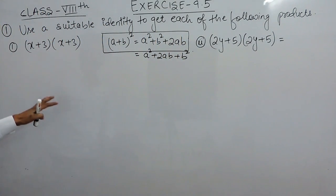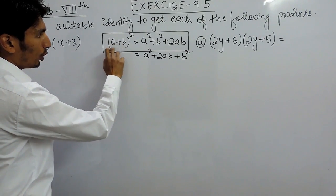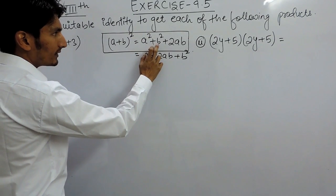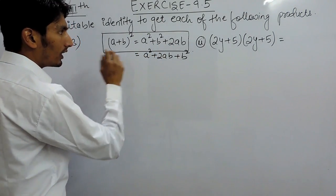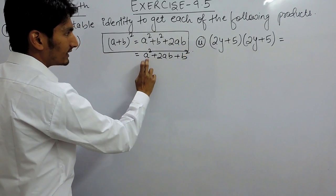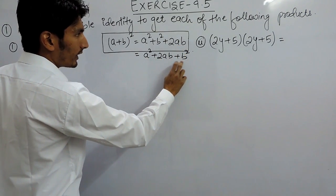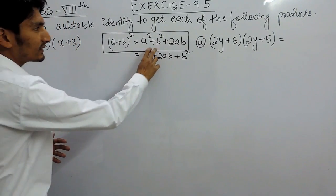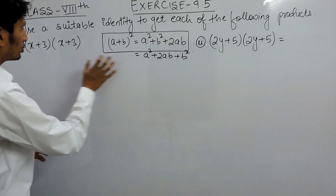To solve this we are using the identity: (a + b) whole square equals a square plus b square plus 2ab, which can also be written as a square plus 2ab plus b square. These two forms are equivalent.